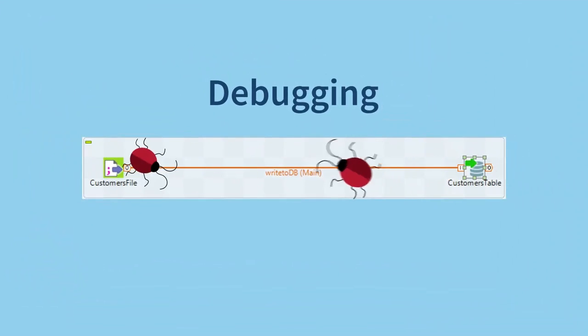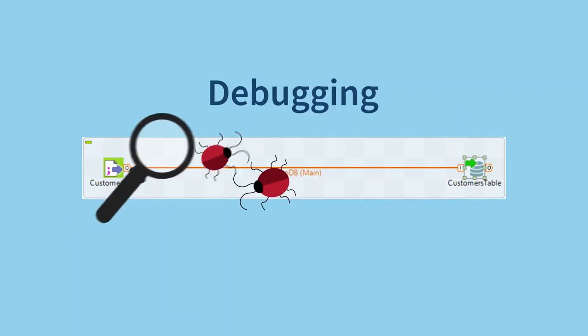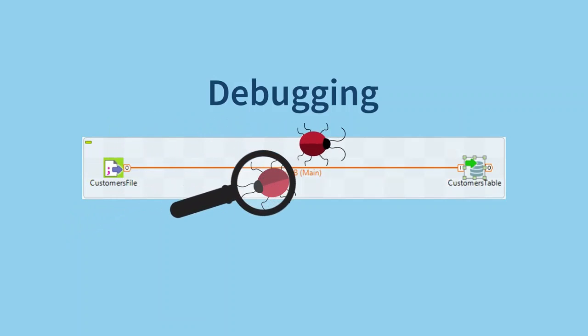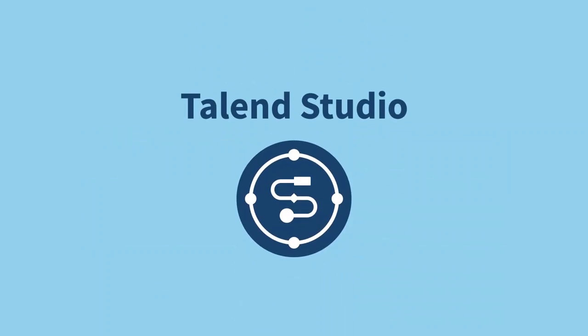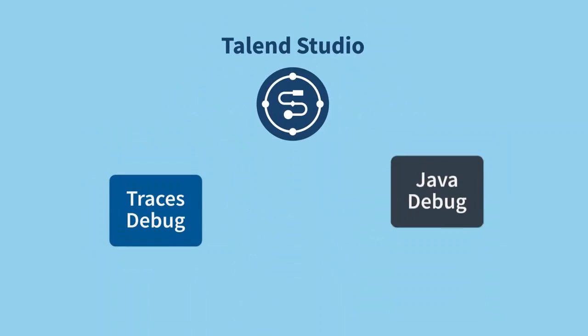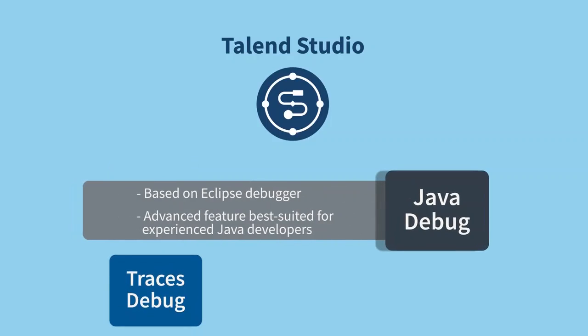Whenever you're developing a job, having the ability to debug it can be vital. In Talon Studio, there are two main types of debugging available: traces and Java. The Java debuggability is based on the Eclipse debugger and is an advanced feature best suited for experienced Java developers.